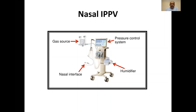For nasal IPPV or NIPPV, you need a gas source, a pressure control system — which is usually a ventilator device — a humidification system, and a nasal interface, similar to CPAP.